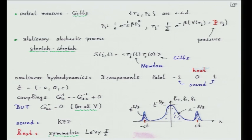Now we have a stationary measure and a deterministic dynamics, giving us a stationary stochastic process. What we want to look at is the stretch correlation function — the difference between two neighboring particles at time T correlated with the same thing at time 0, averaged over the initial Gibbs measure. At time T we solve Newton's equations of motion. That's a difficult problem, but the definition is certainly fine.